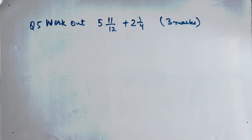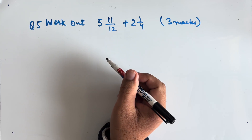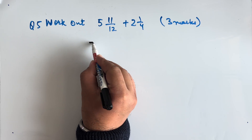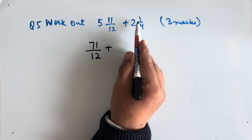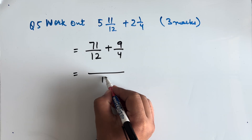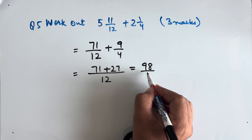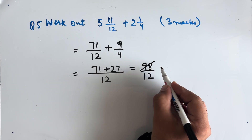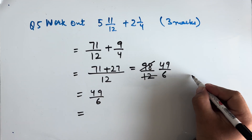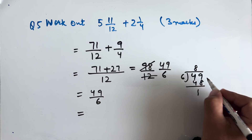Question 5: Work out 5 and 11/12 plus 2 and 1/4. This is worth 3 marks. 5 and 11/12 becomes 71/12 and 2 and 1/4 becomes 9/4. Taking LCM of 12: 71 + 27 = 98/12. This cancels to 49/6. Dividing 49 by 6 gives 8 remainder 1, so the final answer is 8 and 1/6.